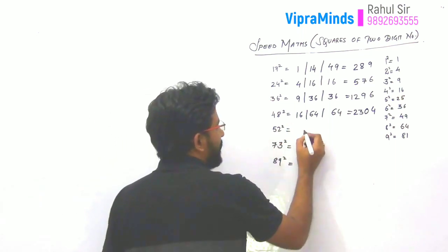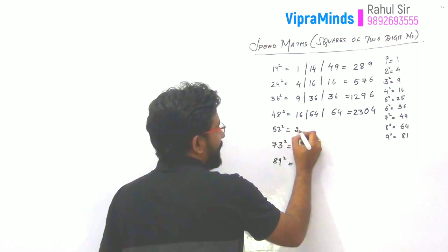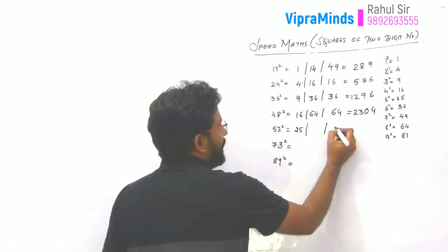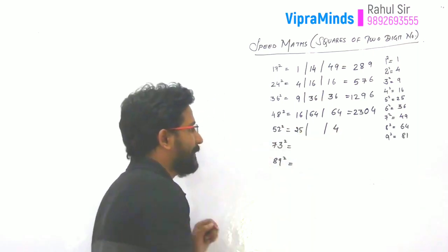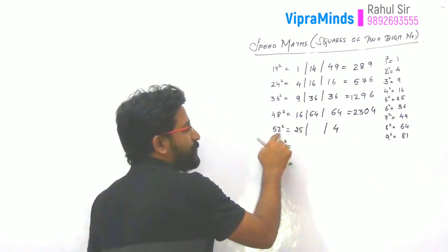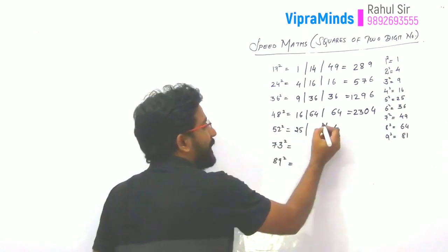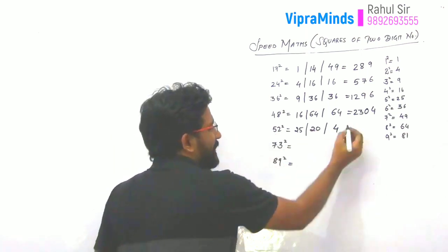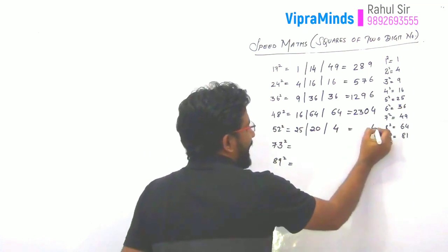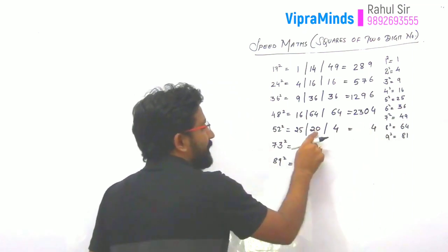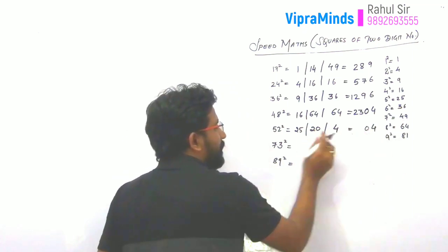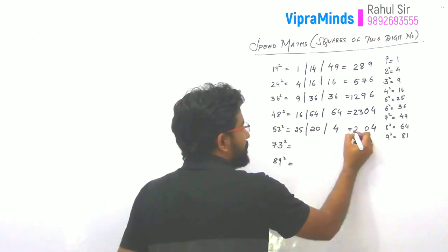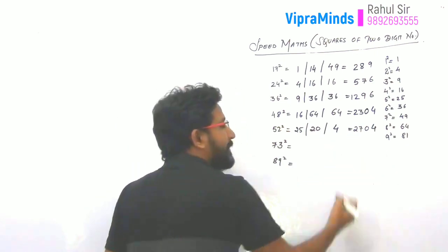Next example is 52 squared. 5 squared is 25 and 2 squared is 4. 5 into 2 is 10, and the double of 10 is 20. Since the right block is a single digit number, write 4 as it is. Then for 20, write 0 and carry forward 2. So 25 plus 2 is 27. Your answer will be 2704.